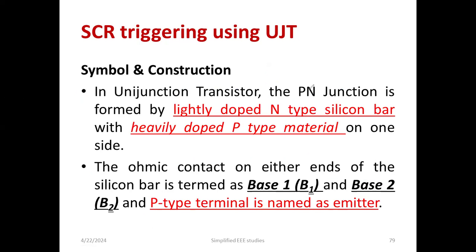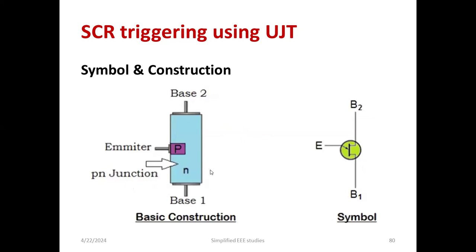In the UJT transistor, the PN junction is formed by a lightly-doped N-type silicon bar with a heavily-doped P-type material on one side. The ohmic contacts on the other ends of the silicon are base 1 and base 2, while the P-type terminal is named as the emitter. So we have B1, B2, and the emitter terminal, but only one junction — that is the speciality of the unijunction transistor. The construction and symbol of UJT is shown in the diagram.